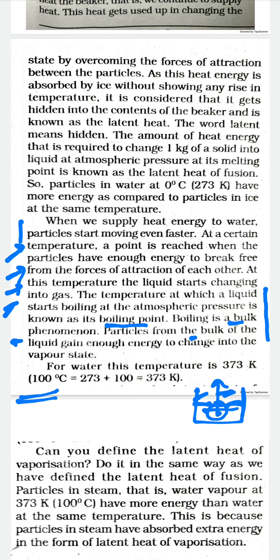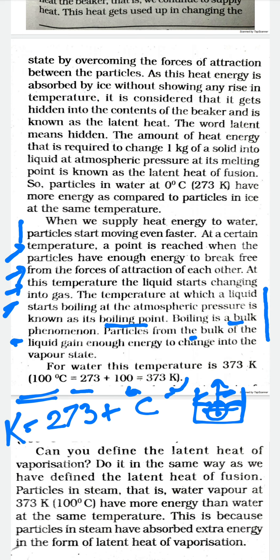To convert any Celsius temperature into Kelvin, we add 273 to the temperature reading in Celsius. So the Kelvin temperature equals 273 plus the degree Celsius temperature. For example, to convert 0 degrees Celsius into Kelvin, add 273 to 0, giving us 0 degrees Celsius equals 273 Kelvin.